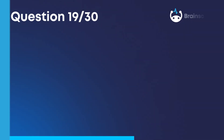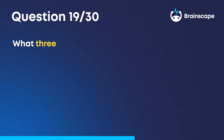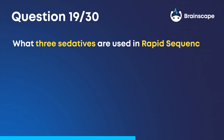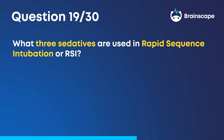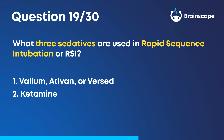Question 19. What three sedatives are used in rapid sequence intubation, or RSI? Valium, Ativan, or Versed; Ketamine; and Etomidate.